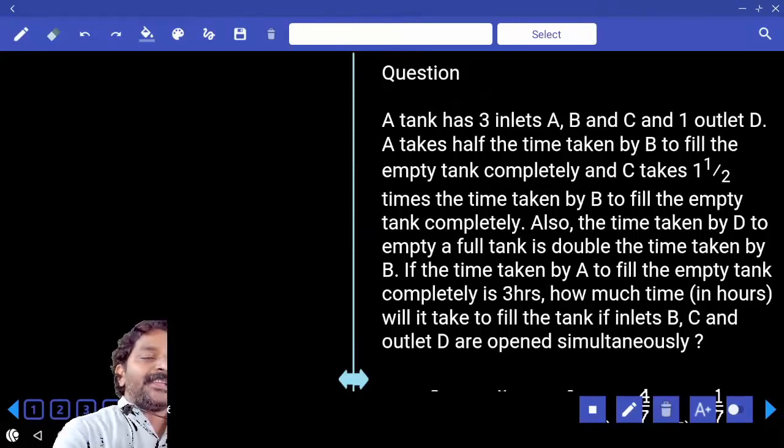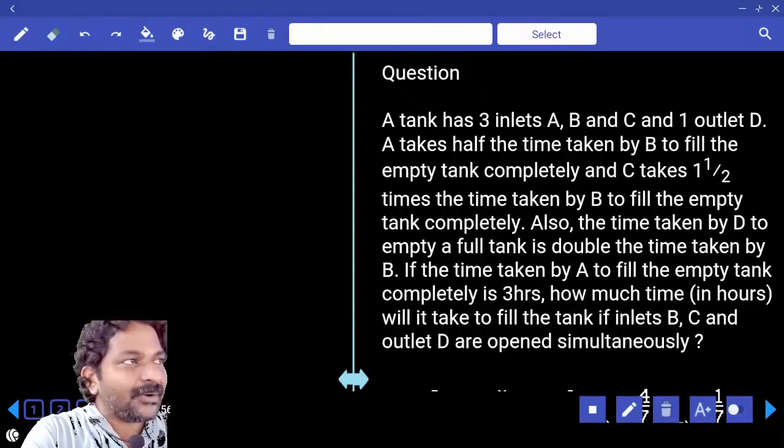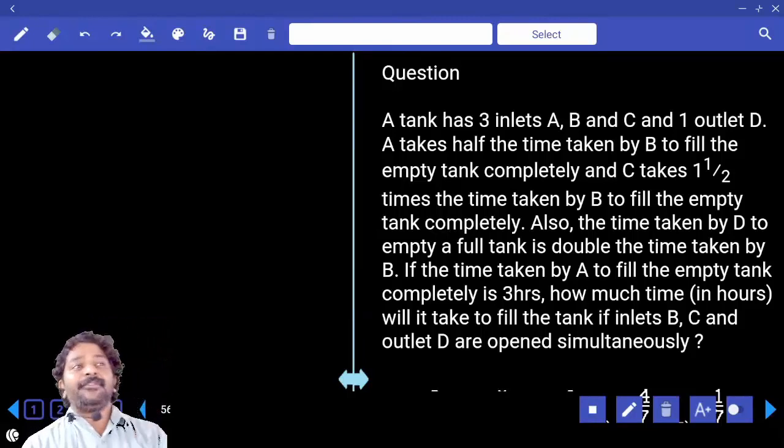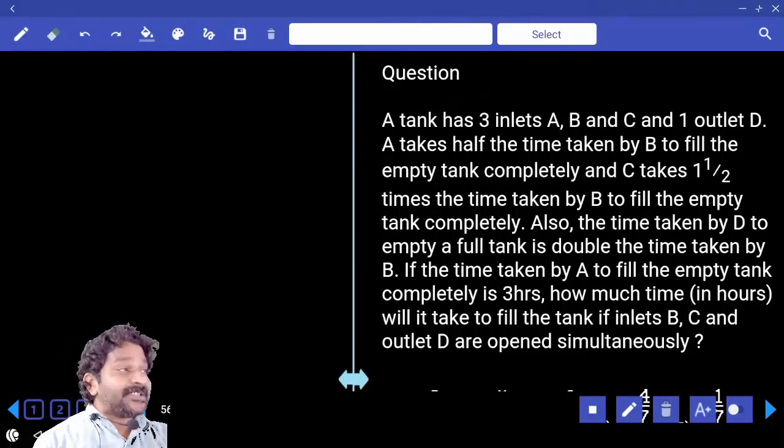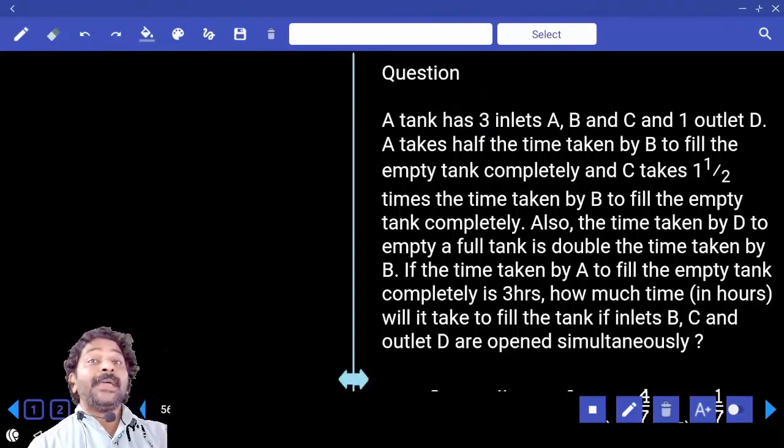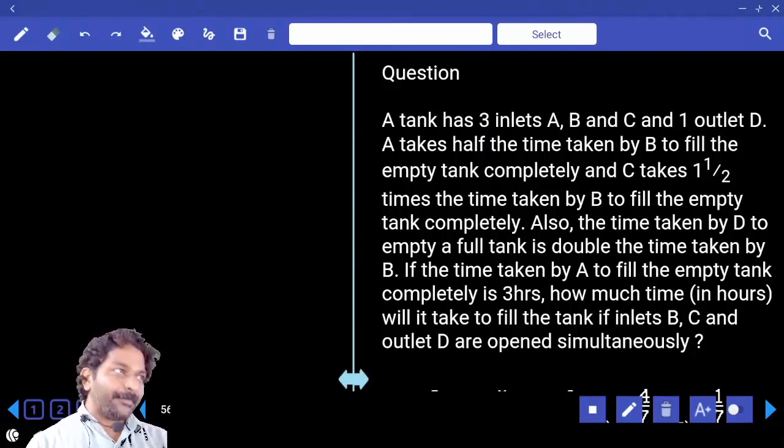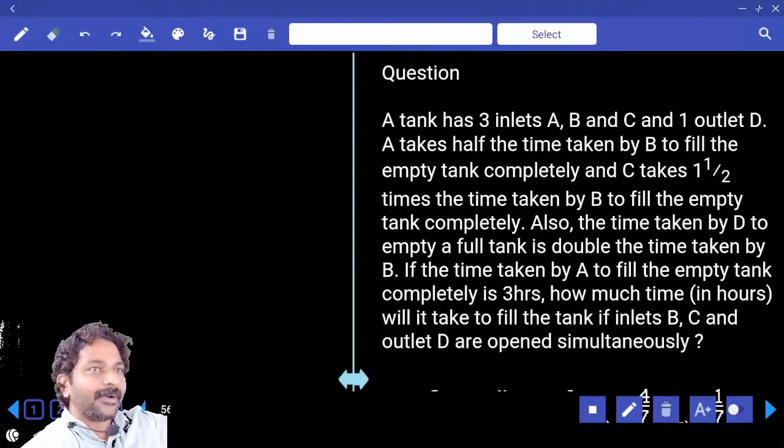As 2x, A takes half the time which is x. You need to be careful because they may compare efficiency or time. Remember, time and efficiency are inversely proportional. Now we're talking about time period only.